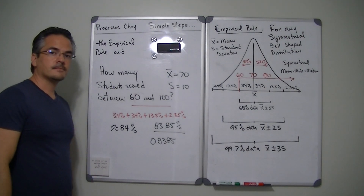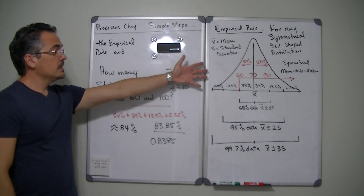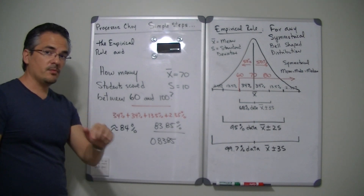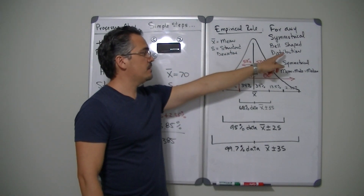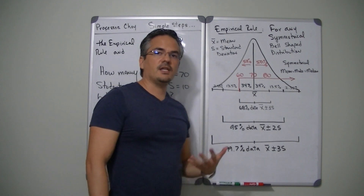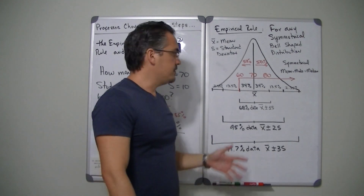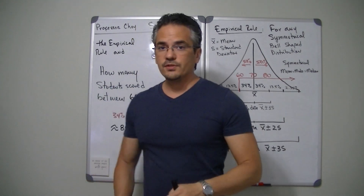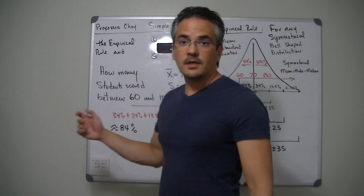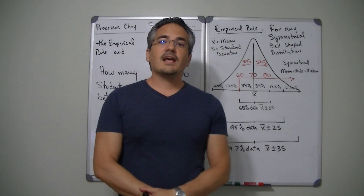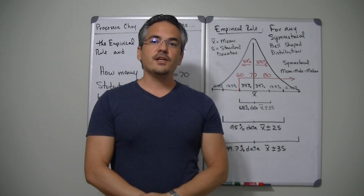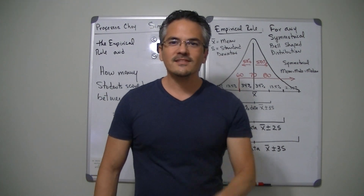With this example, assuming your data set is symmetrical and bell-shaped, you can come up with pretty much any probability to figure out proportions of grades or similar measures. I hope today's class was useful, and thank you for tuning in to Professor Choi again. Have a good one.